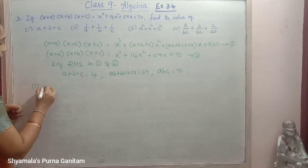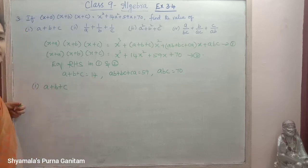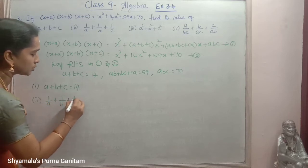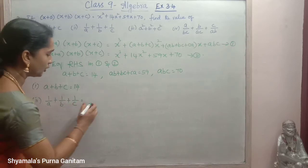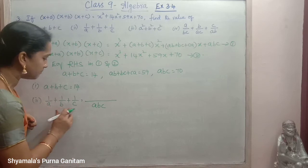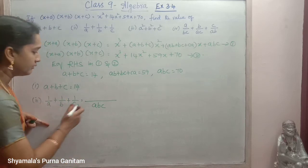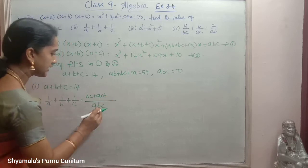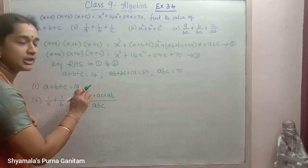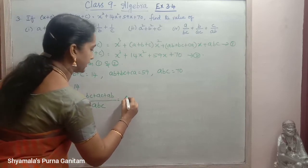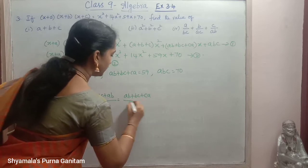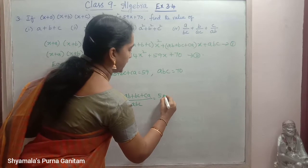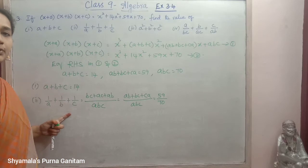So these are the values obtained. Now we solve the four sub-questions. First: a+b+c. Directly we write it as 14. Second: 1/a + 1/b + 1/c. Taking LCM as abc, the numerator becomes bc+ac+ab, which is ab+bc+ca. So the answer is (ab+bc+ca)/abc = 59/70.